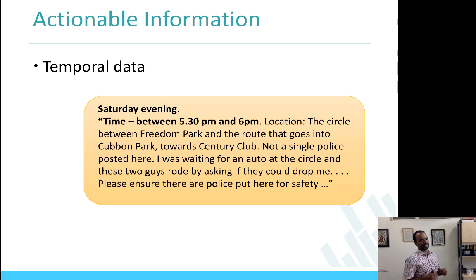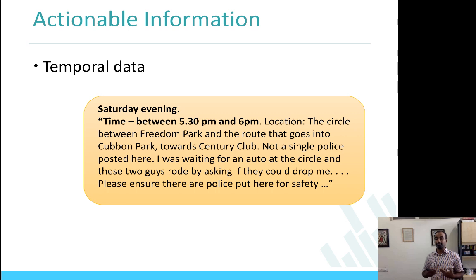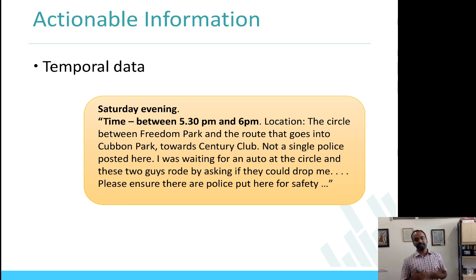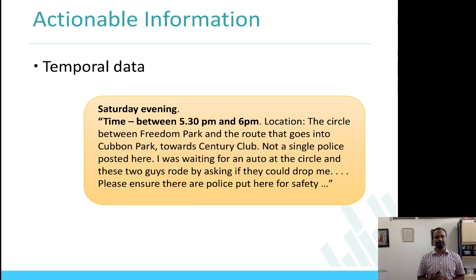Given the goal was actionable information, we were focused on finding out from the content what kind of information can be drawn. Here is one post which shows temporal data that can be extracted: time between 5:30 and 6 PM, location such-and-such, not a single police person posted here, I was waiting for an auto at the circle. This gives police organizations a good sense of what time, what location, what the problem is, and what should be done. It is easy to pull out this information. If this information was not there, the police would have to ask what location and what time.